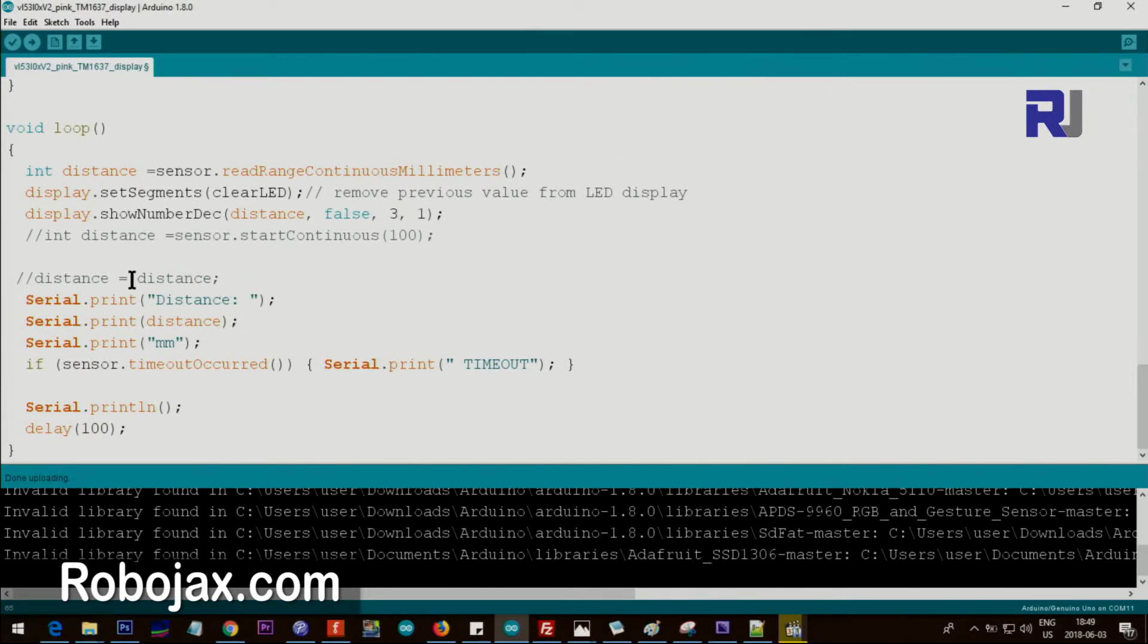These values are for the serial monitor. If timeout occurs, it will print timeout. The loop continues every 100 milliseconds.